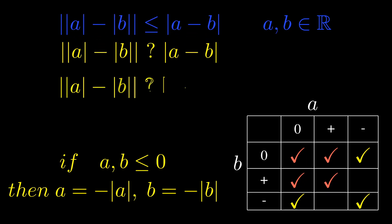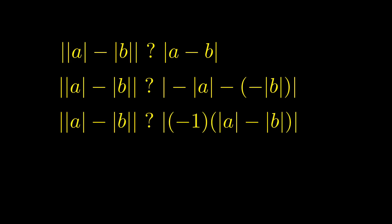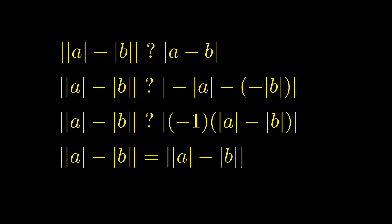So if you now take that and substitute it on the right hand side of the equation, you will notice that the negatives on the right hand side can actually be factored out. You see that negative one in there, and the absolute value of negative one is just one. So once again, the left hand side and the right hand side are equal to each other.